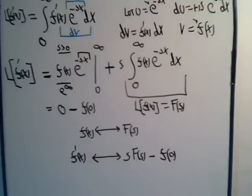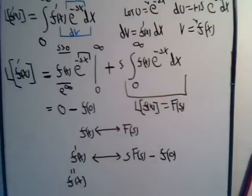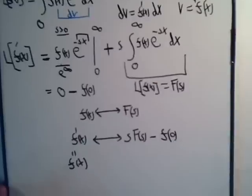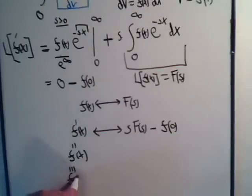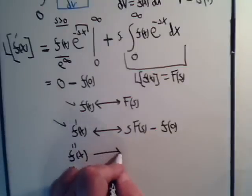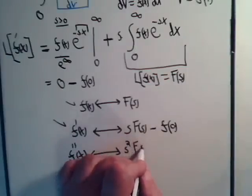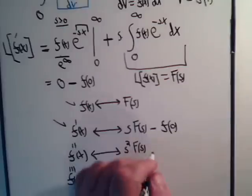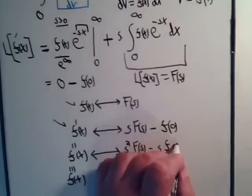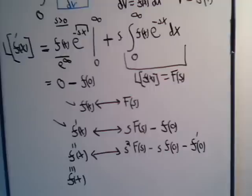In the next video, we're going to use this formula and show what it would be for the second derivative f double prime of x. Using this relation, we're going to show that in this case it's going to be s squared times F of s minus s times f of zero minus f prime of zero. We'll prove this in the next video.